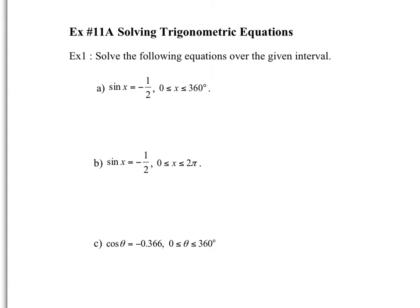In the past what you did is you found the inverse sine function, and you solved for the reference angle. But knowing this equation is an exact value, you can look at your unit circle and identify those values. So sine is equal to negative 1 half — it's equal to 210 degrees, which would be your angle in the third quadrant, and 330 degrees, which would be the angle in the fourth quadrant.